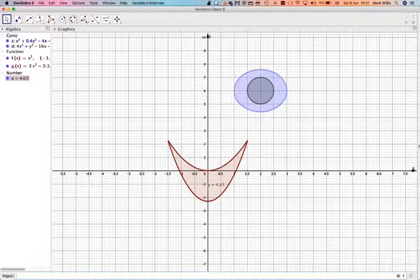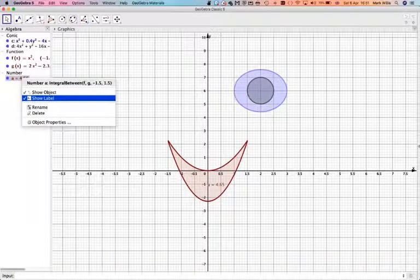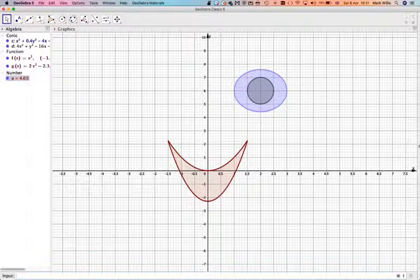But it does put a number in, so it does actually mark the area. So if you right click, and then get rid of the show label, the number will disappear. So we've got the eye, the right eye, and the mouth.